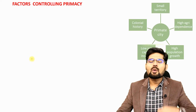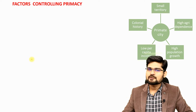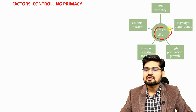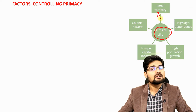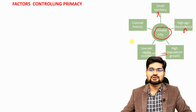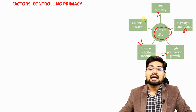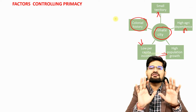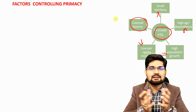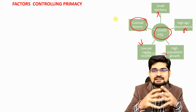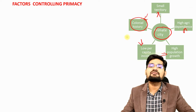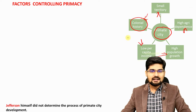Several factors control primacy. These include: small territory, high agricultural dependence, high population growth, low per capita income, and a colonial history. These are the five major factors that influence the making of a primate city. Jefferson himself did not determine the process of primate city development.